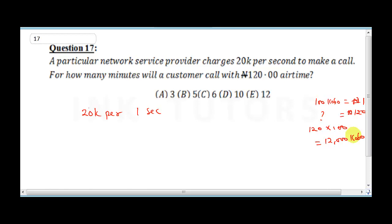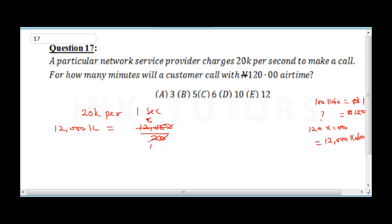Now we know that 20 kobo gives us one second. So 12,000 kobo would be 12,000 divided by 20. Zeros cancel, giving us 1,200 divided by 2, which equals 600.